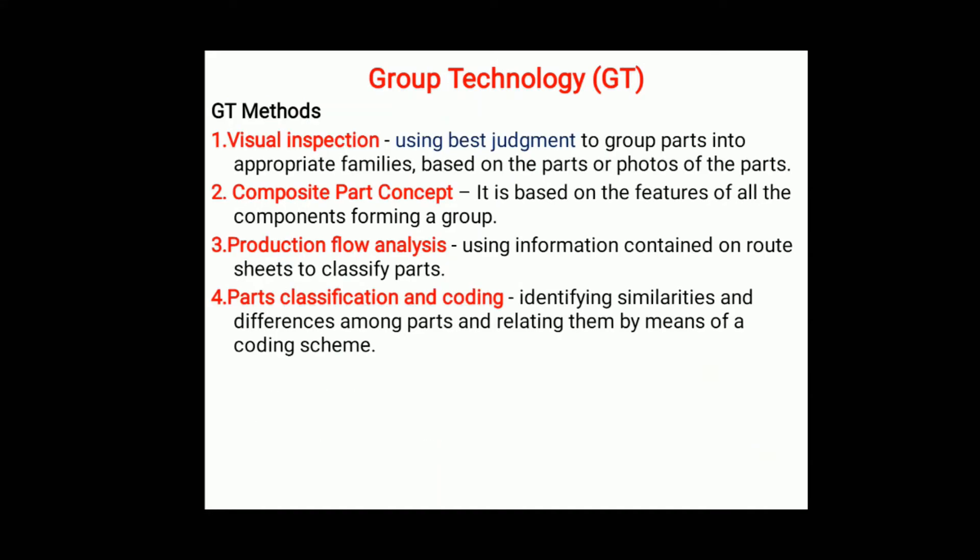Next is group technology methods — how we identify and separate different groups. There are four methods. The first is visual inspection. Using this technique, you apply best judgment to group parts into appropriate families. Simply by using your naked eyes, you can visualize the parts and separate similar parts into different groups based on geometrical size and shape.